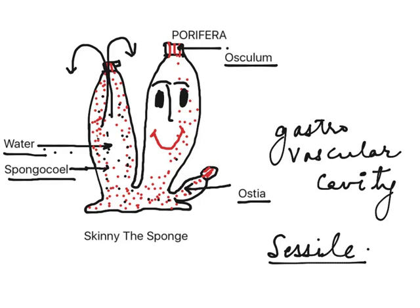The flagellated cells, or choanocytes, function only in a particular direction. Hence the ostia are the in-current pores, which means they can only facilitate the inward movement of food and gases, whereas the osculum, which is a single large pore, can facilitate only the outward movement of things — for example, the wastes.